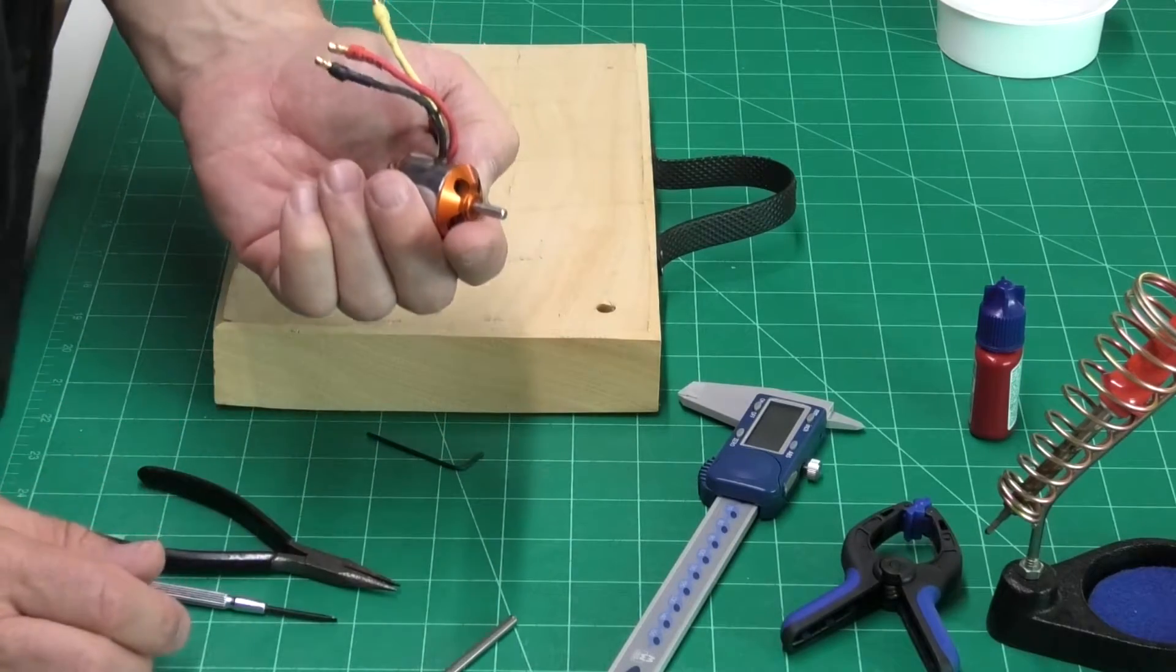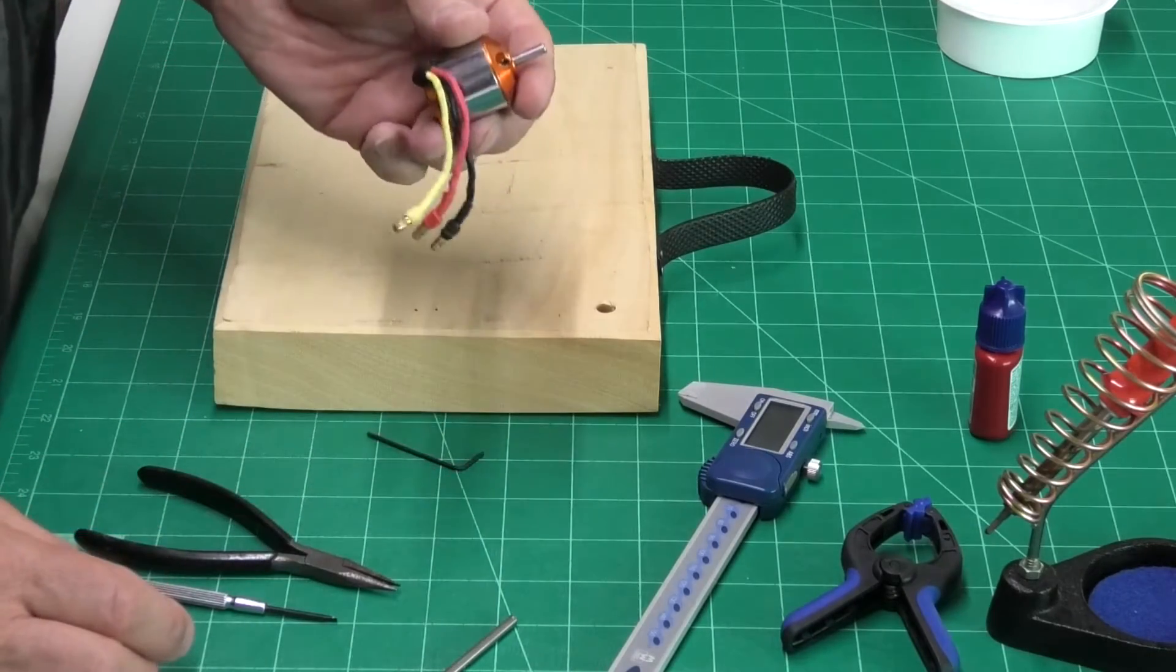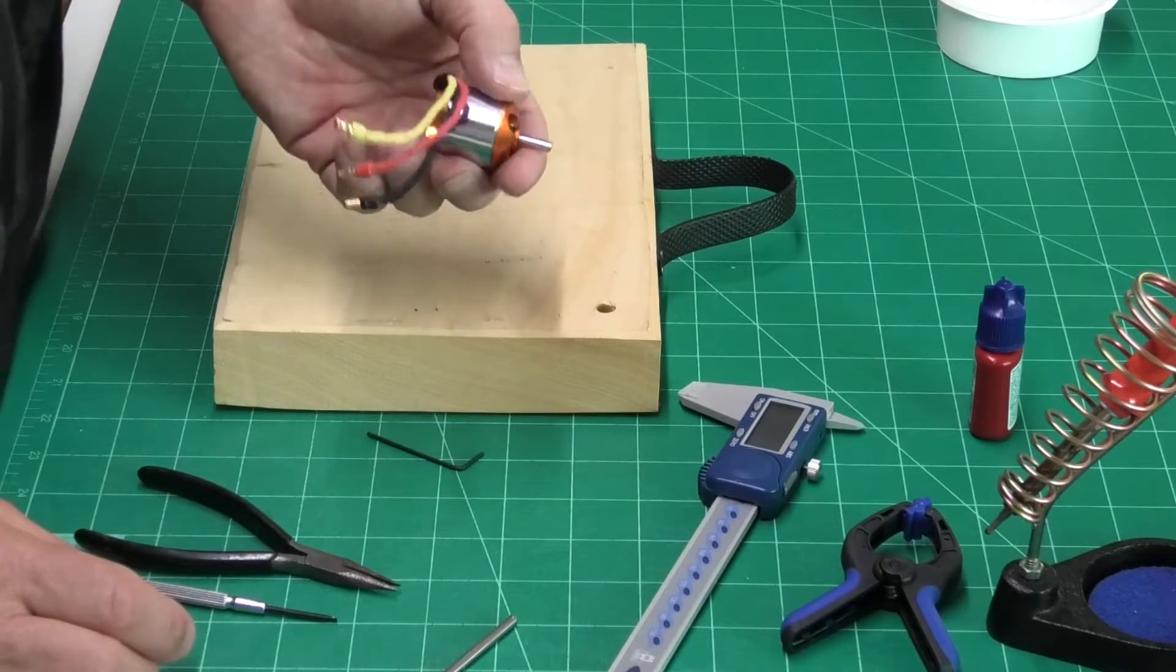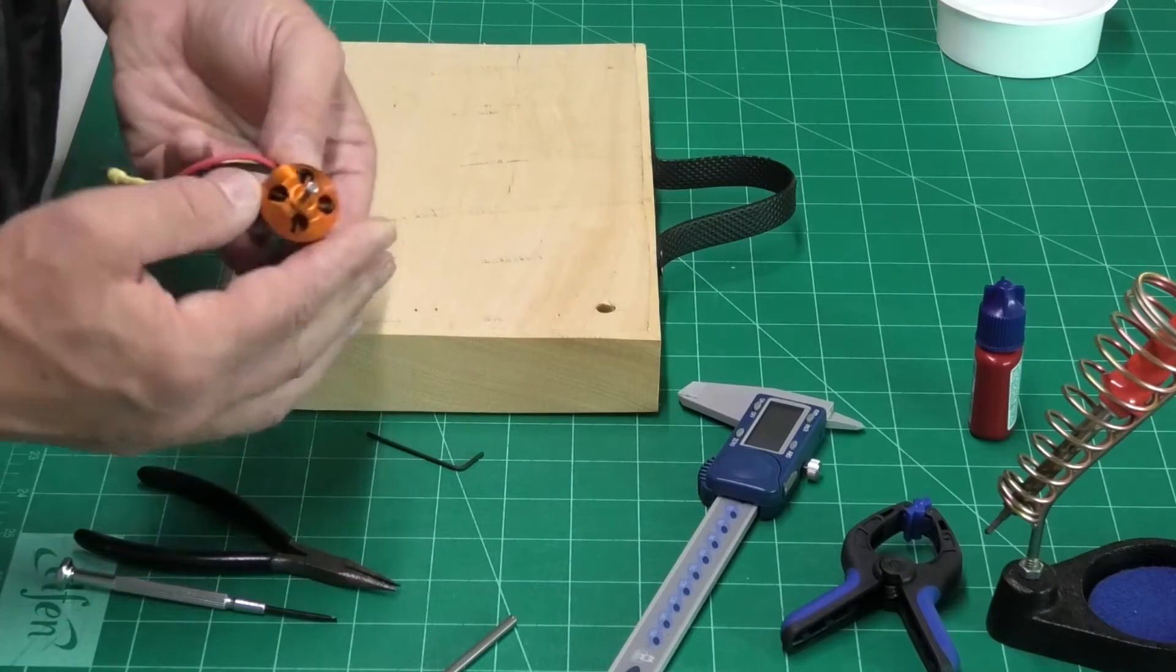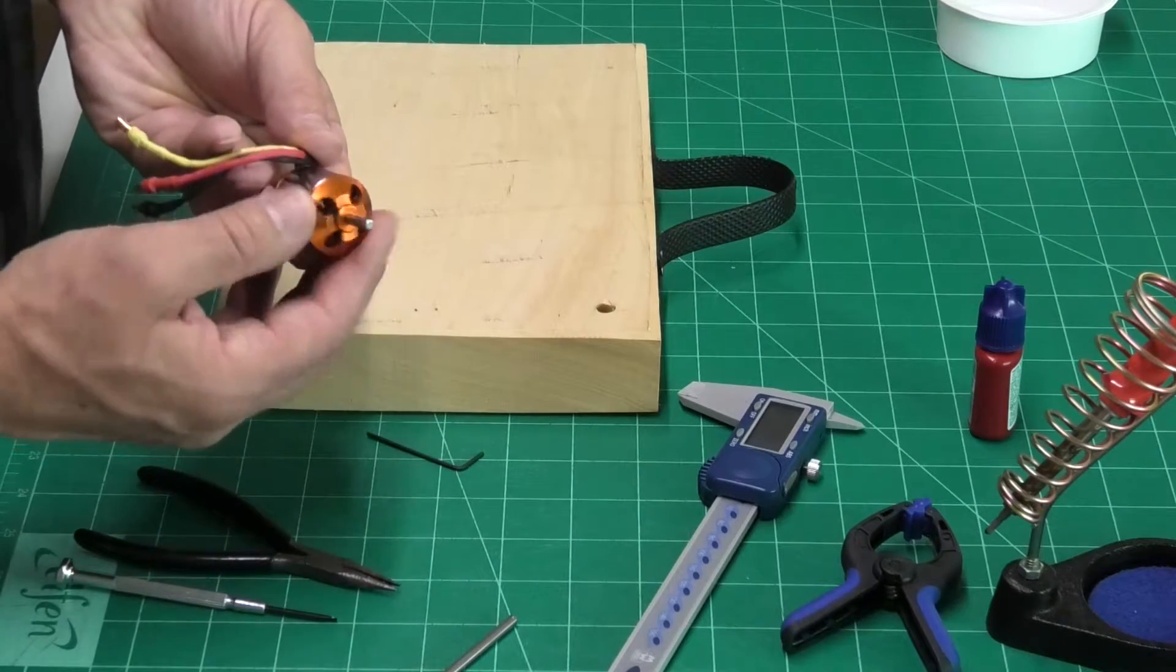This came off my 1.2 meter Cessna, which decided it would be fun to take a nosedive into a very hard surface and just put a very slight bend in the spindle.